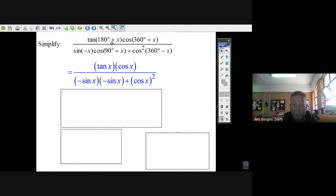Tangent is positive there, but the reference angle is just x, so it's just tan x. 360, I go all the way around the circle plus x, I'm still in the first quadrant, it's just cos x.